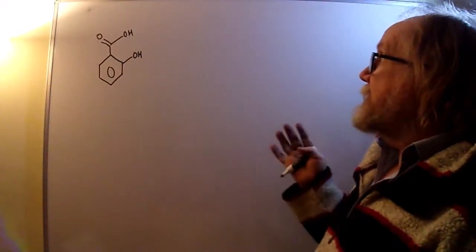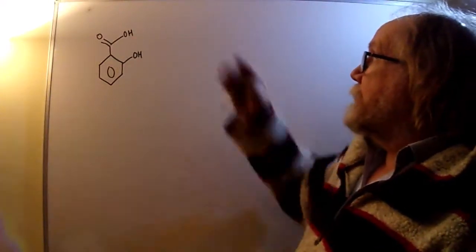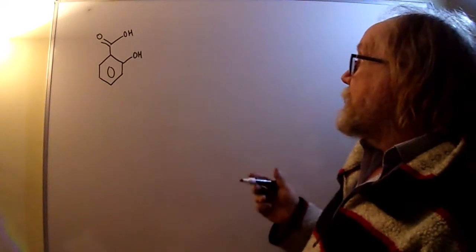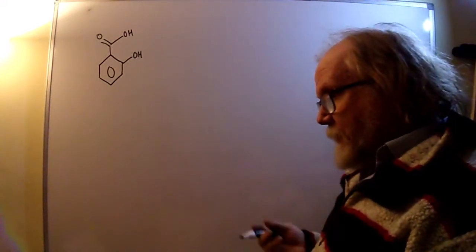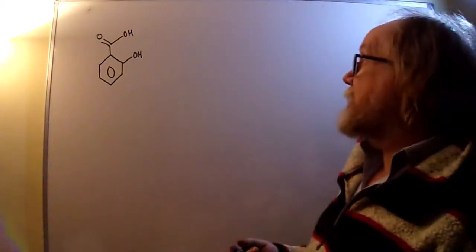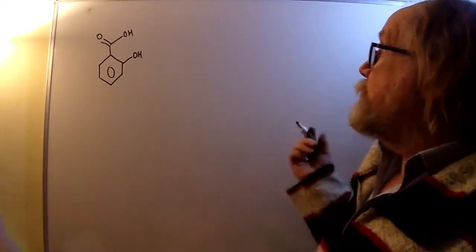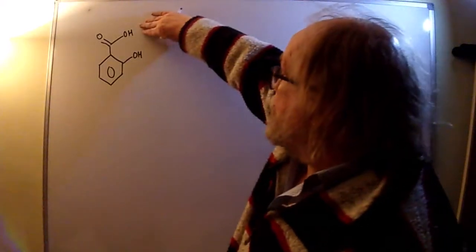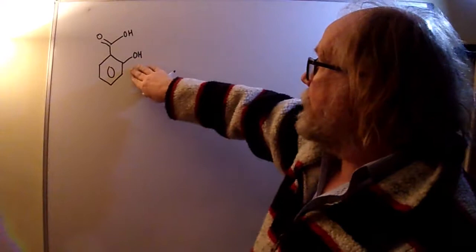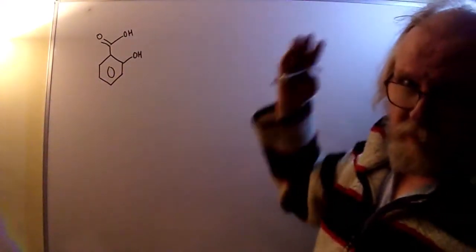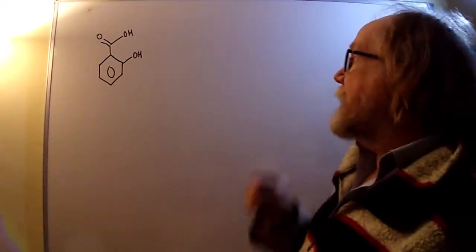Part A asks us to consider the reaction of salicylic acid with hot propan-2-ol in the presence of concentrated sulfuric acid. We've got to consider both functional groups - a carboxylic acid group and a phenol - and consider whether either or both of them would react.